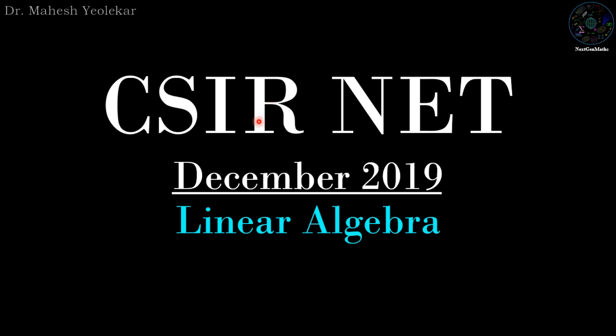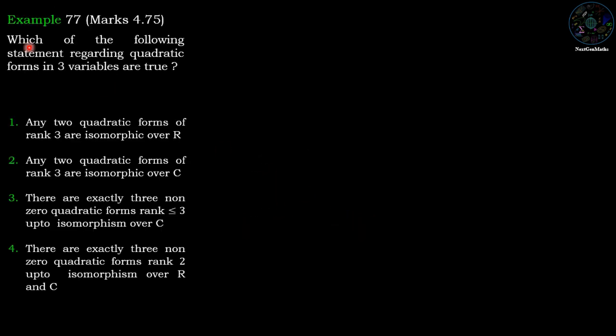Hello friends, in this video we are going to discuss a problem from CSIR NET December 2019 in linear algebra. Example number 77: Which of the following statements regarding quadratic forms in three variables are true?